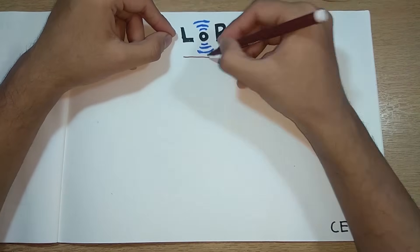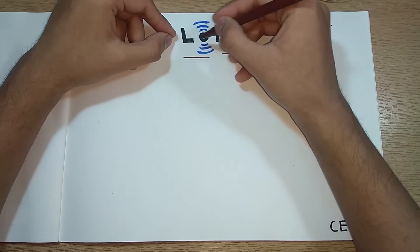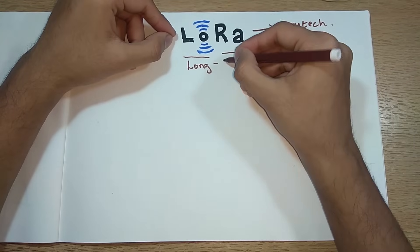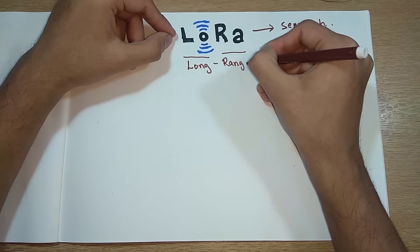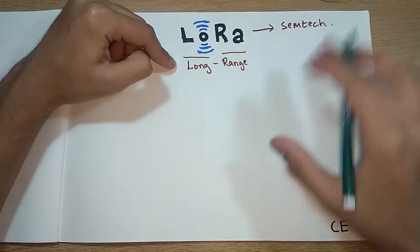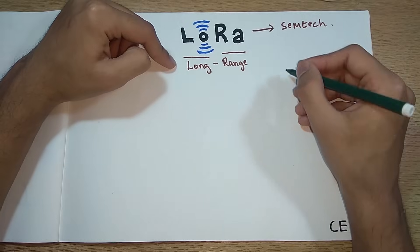LoRa is a short form of two words: Lo stands for Long and Ra stands for Range. What can we do using this? Suppose in the Internet of Things platform you have a sensor node somewhere here and you need its data at some place over here.